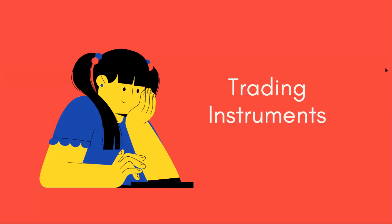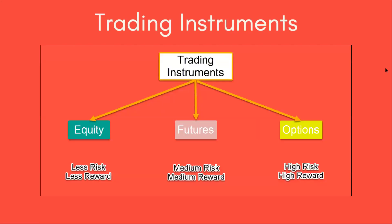Before we take a trade in the stock market, it is better to know the three different trading instruments available. There are three trading instruments: equity, futures, and options. It is better to know how these trading instruments work and what are the different types of risk and reward available with each.